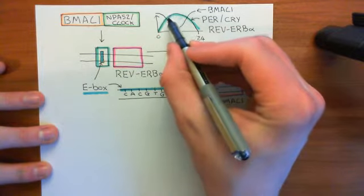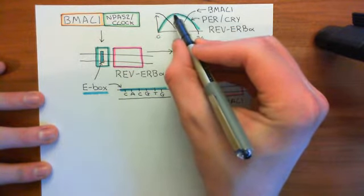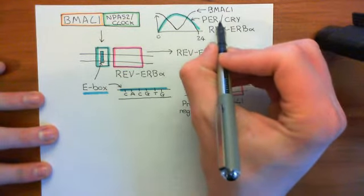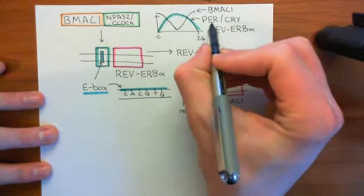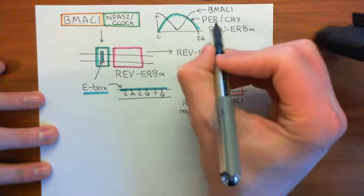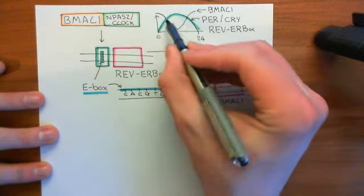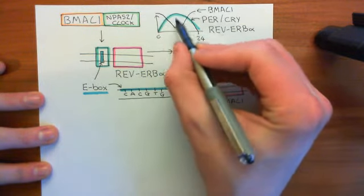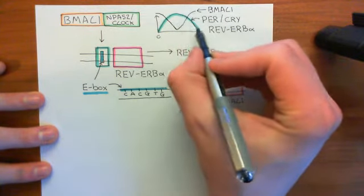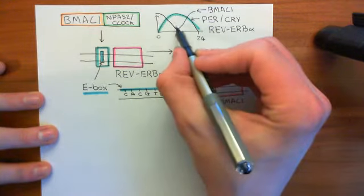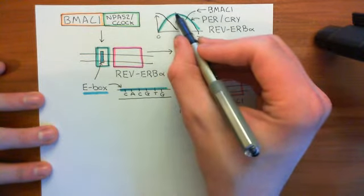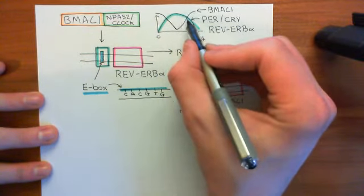Not only is the rise in period and cryptochrome proteins going to stop the production of more period and cryptochrome proteins by directly stopping the interaction of the BMAL1/NPAS2 or BMAL1/CLOCK heterodimer with the E-box in the promoter region of the period and cryptochrome genes, but you're also getting the reduction in the levels of BMAL1 at this peak. So BMAL1 is oscillating completely out of phase with period and cryptochrome levels. Both of these things lead to the production of further period and cryptochrome proteins going down, which means the levels are going to fall.